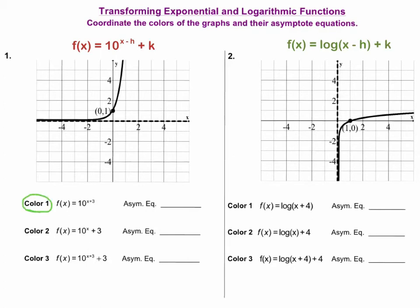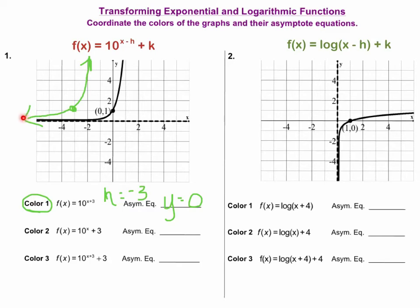Using green, I'm going to look at f of x equals 10 to the x plus 3 power. This means that my h value is equal to negative 3, so I'm going to take my key point and move it left three units. And from this point, that is where I will plot my new graph. The equation for the asymptote will be y equals the k value, and in this case there is no k value, so it's zero. This green curve, as it continues going towards negative infinity, is continually getting closer and closer to y equals zero. But because y equals zero is the asymptote, it will never touch y equals zero.